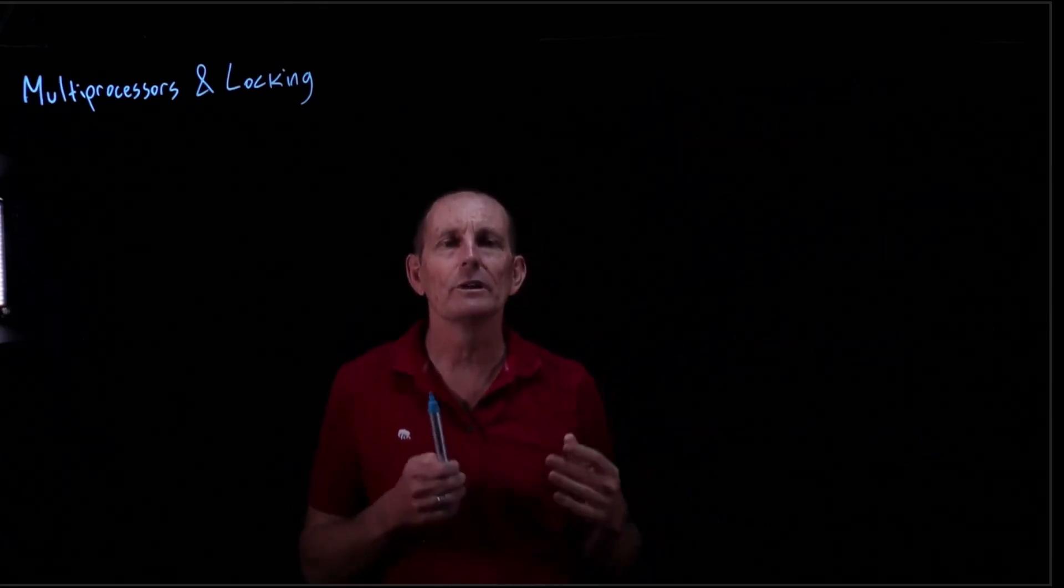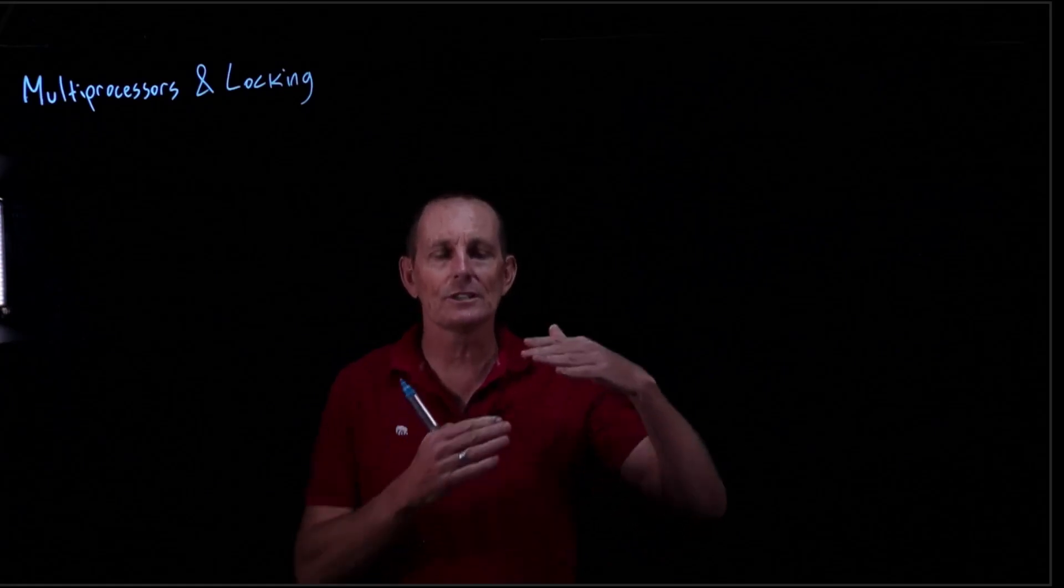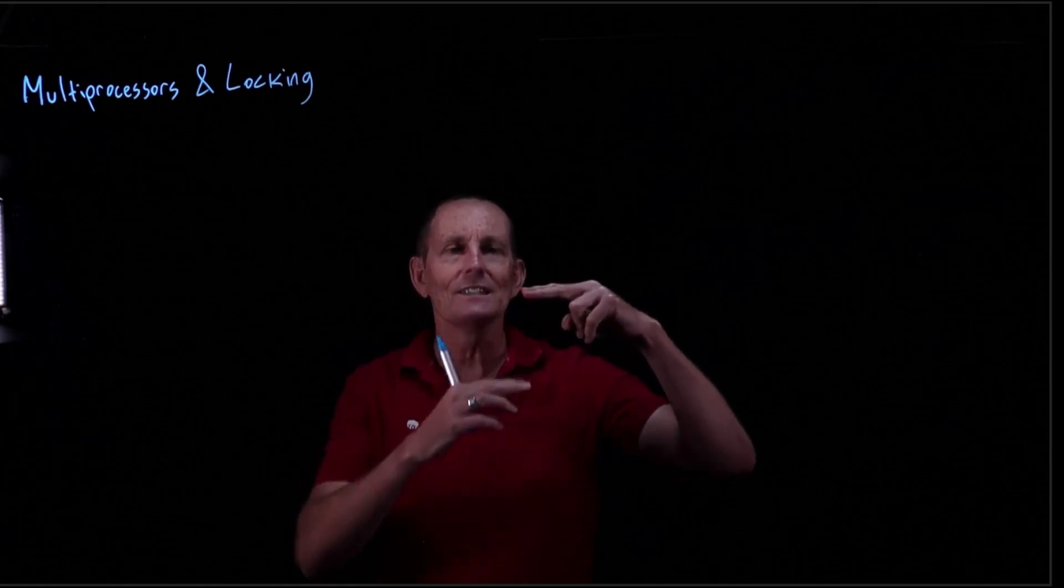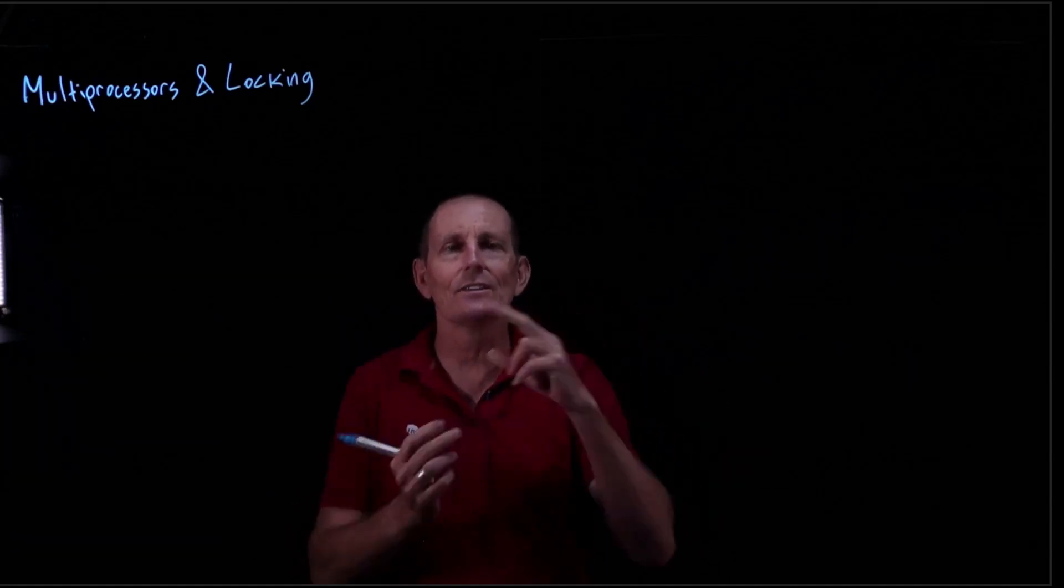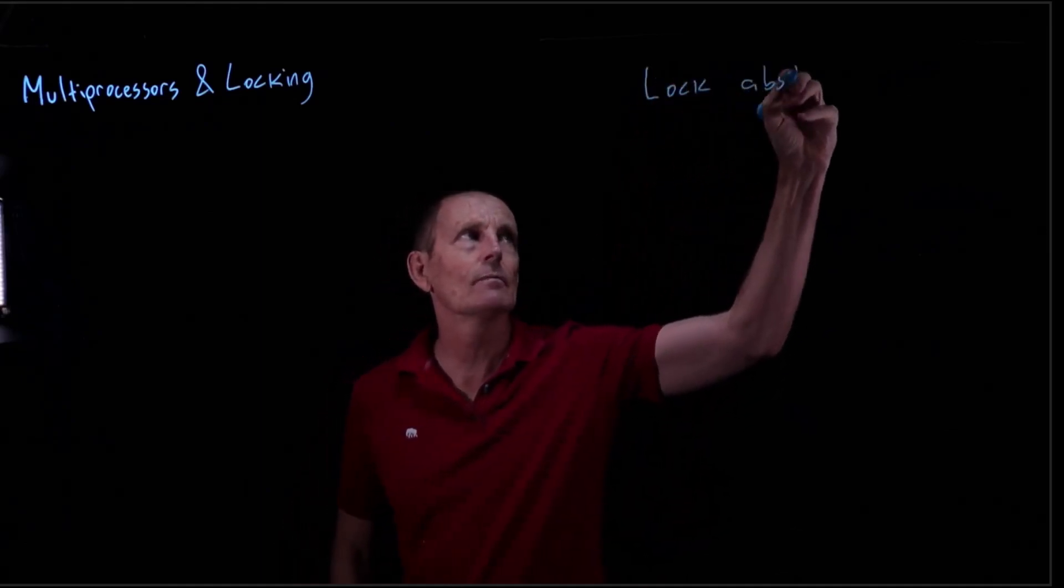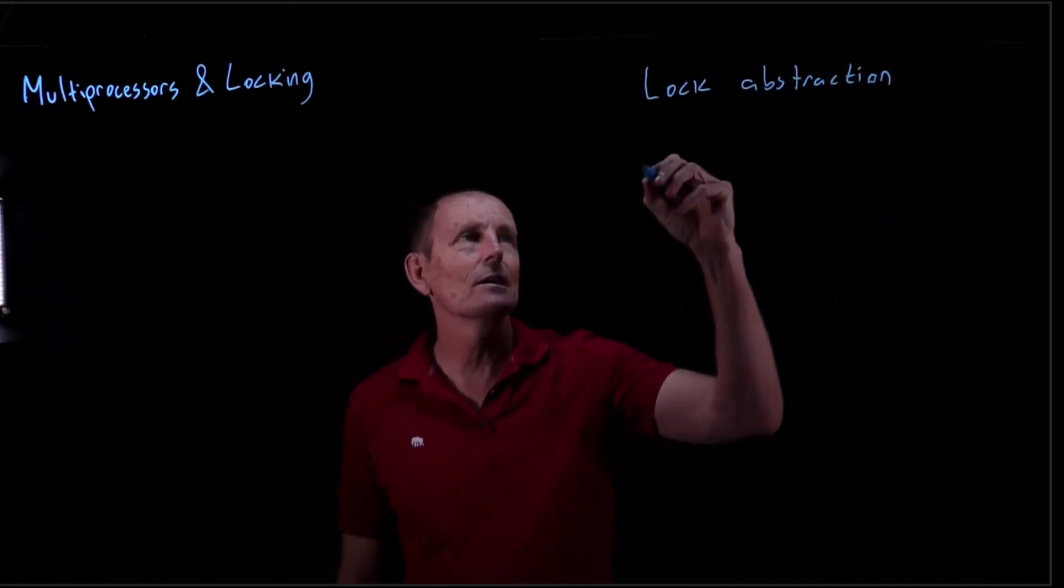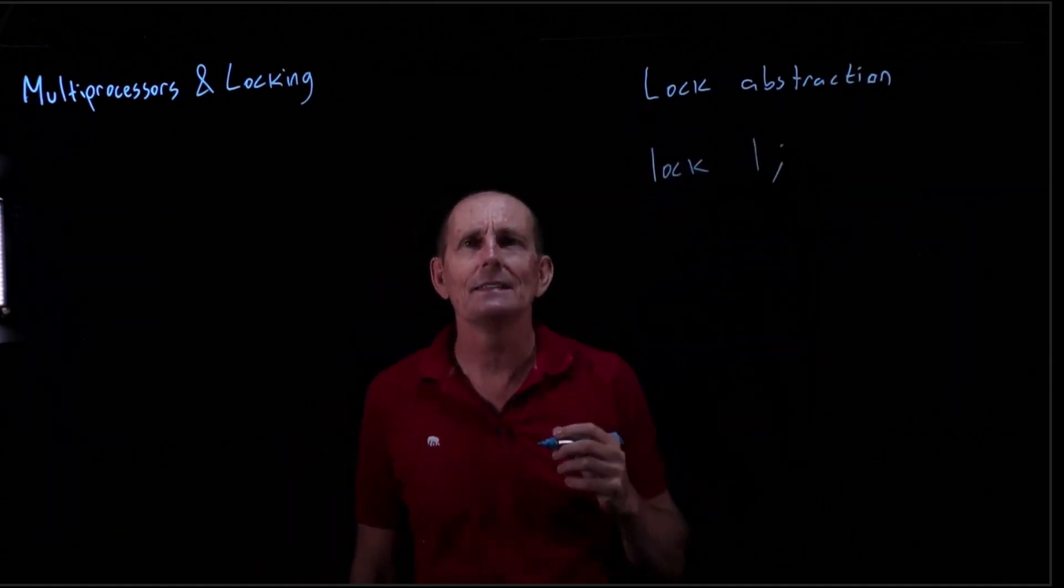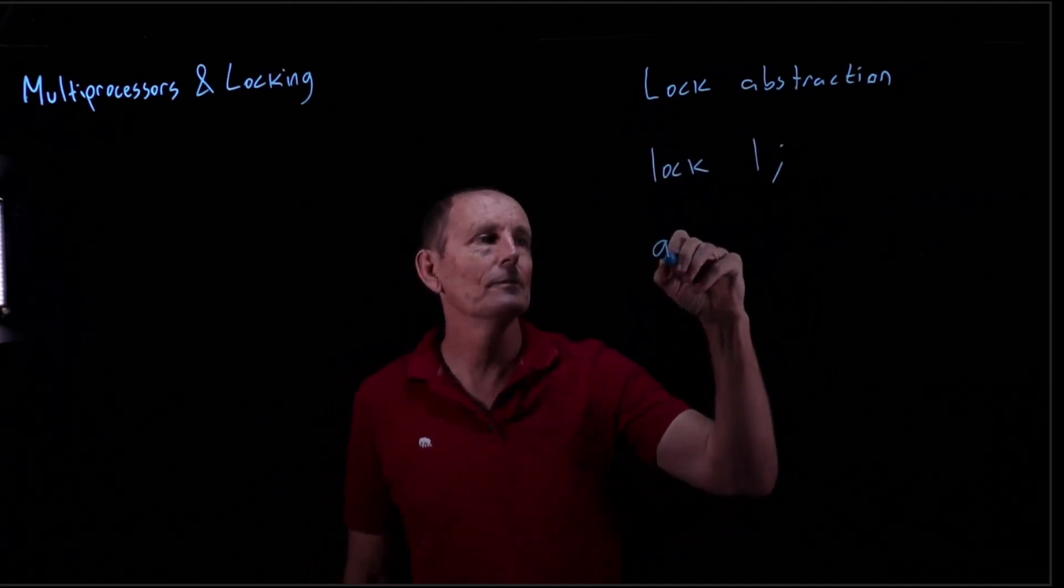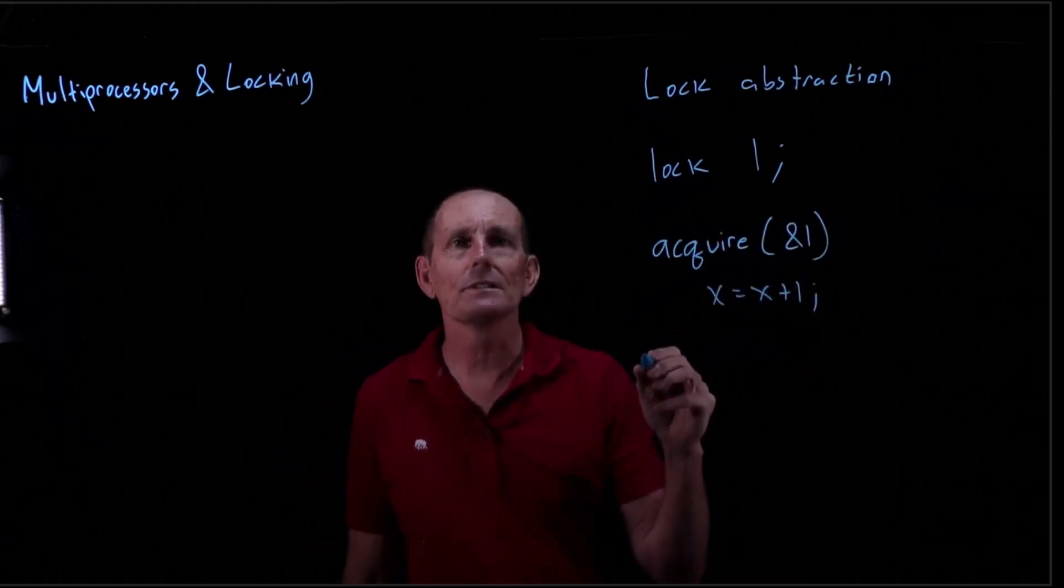So what do we do if we want to have what look like atomic operations, that is, look like to other processors that we have done a sequence of operations and it's either all or nothing on other multiprocessors? That's where we get into the lock abstraction. For locks, what we do is we have something called a lock. Locks have two different operations: we can acquire a lock, then we can do things, and then we can release the lock.